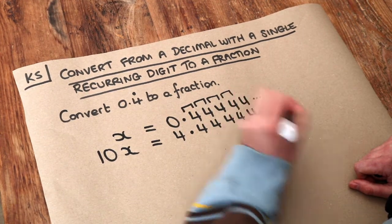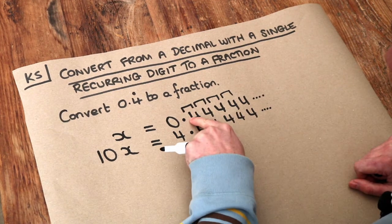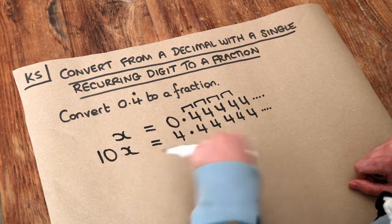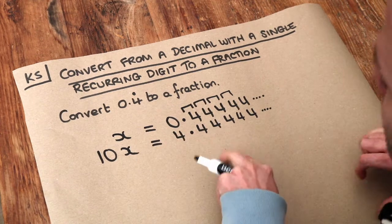Why do we times by 10? Well, I'll explain in the next video. Because if it was to repeat every say two digits, we times by 100, every three digits times by a thousand, etc.